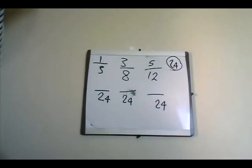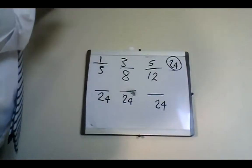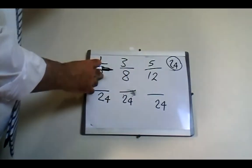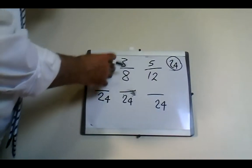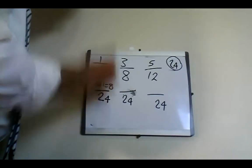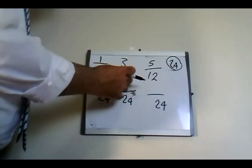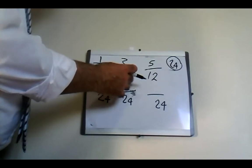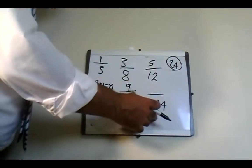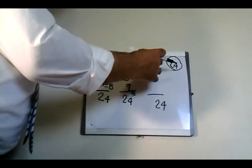I divide 24 by each denominator, then multiply by the numerator. For 1/3: 24 ÷ 3 = 8, times 1 = 8. For 3/8: 24 ÷ 8 = 3, times 3 = 9. For 5/12: 24 ÷ 12 = 2, times 5 = 10. So the new numerators are 8, 9, and 10 over a common denominator of 24.